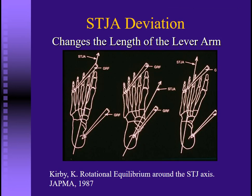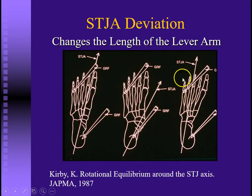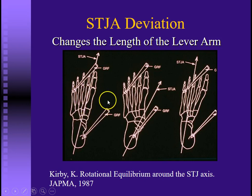These pictures are courtesy of Dr. Kevin Kirby from his article 'Rotational Equilibrium Around the Subtalar Joint Axis,' where he discussed subtalar joint axis deviation. He noted that when comparing a normal foot to a pes planus foot type, not only is the foot flattened, but the talus and tibia have internally rotated. Because the axis of the subtalar joint moves with the talus, as that foot flattens and the leg internally rotates, that axis moves medially.